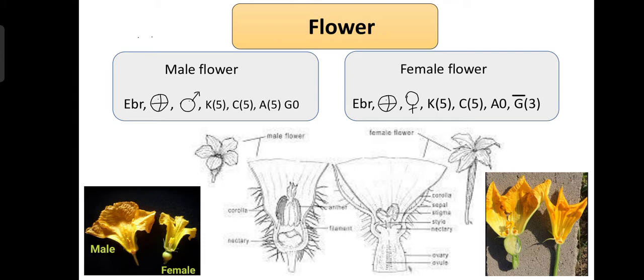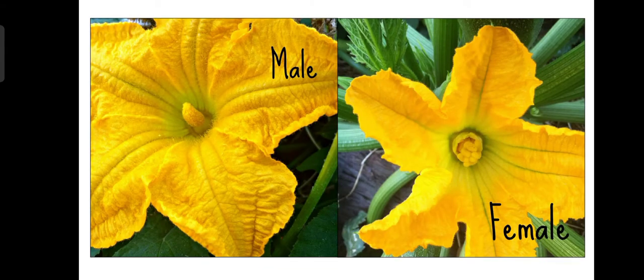In the male flower, the androecium contains five stamens which is synandrous, meaning anthers and filaments both are fused. In the female flower, the androecium is absent and the ovary is tricarpellary syncarpous with an inferior ovary. We have two families, Cucurbitaceae and Asteraceae, which have inferior ovaries. These are the male and female flowers of Cucurbitaceae, easily distinguishable.